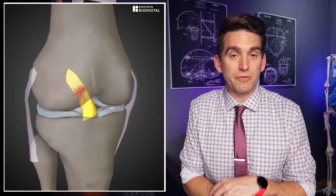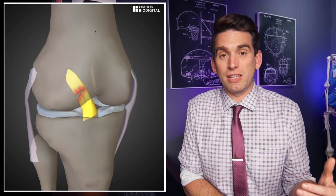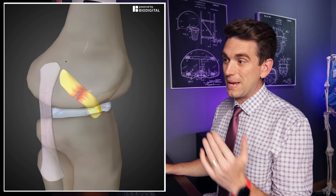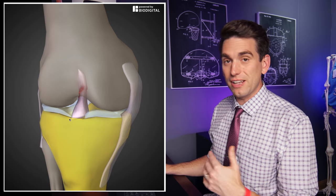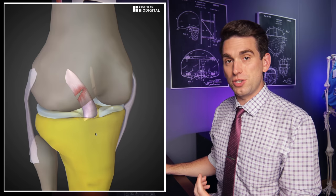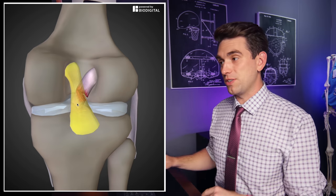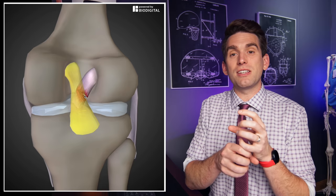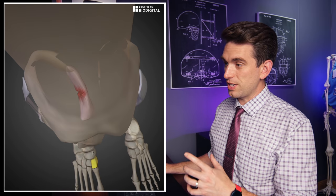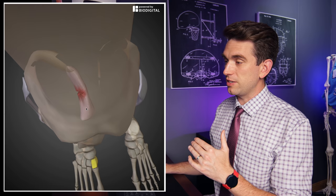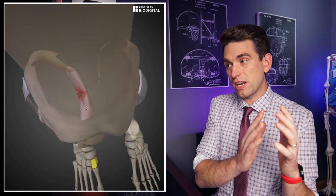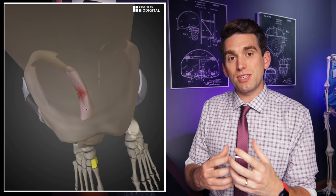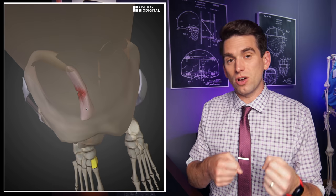We first have to understand the anatomy and the function of the ACL to then understand how it gets torn. The ACL is the anterior cruciate ligament, and it runs from the backside of the femur down to the front side of the tibia — the thigh bone down to the shin bone. The ACL and the PCL run in opposite directions from one another, and they both help to stabilize the knee from coming apart and also preventing some rotation. The ACL also runs a little bit from the outside of the knee to the inside, so we have to think of the positions that are going to pull and put stress on that ligament.